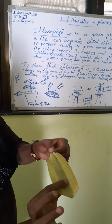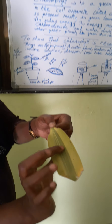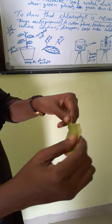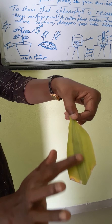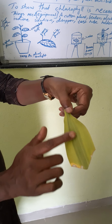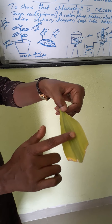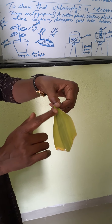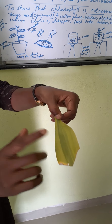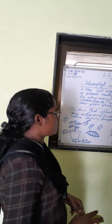What is chlorophyll? We already learned that chlorophyll is the color pigment. Which color pigment? Leaves — the green color is given by chlorophyll.